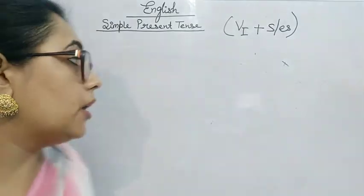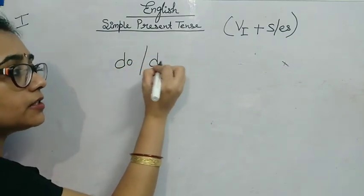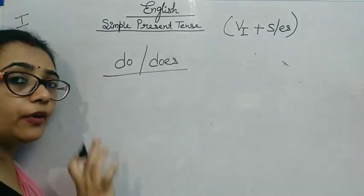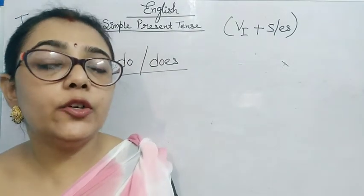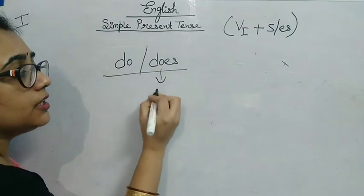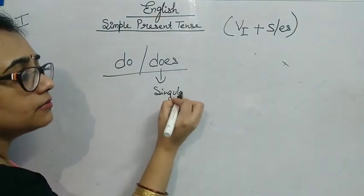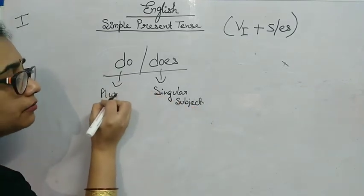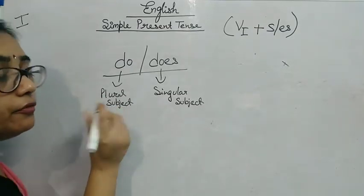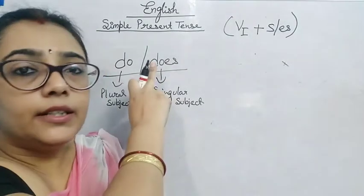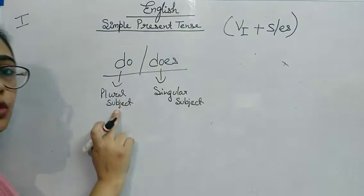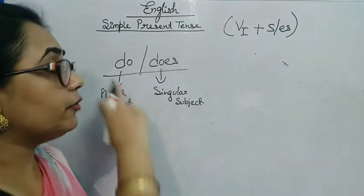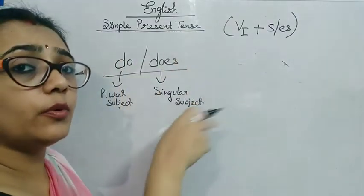Now we will talk about do or does. You have come across these words in negative and interrogative sentences. We use 'does' with a singular subject and 'do' with a plural subject. For negative sentences, 'does not' is used with a singular subject and 'do not' with a plural subject.